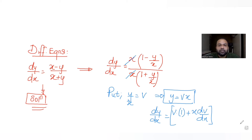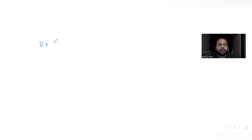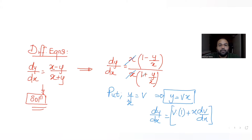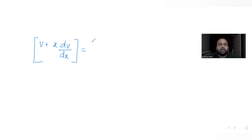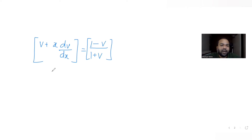So instead of dy/dx I can write v plus x·dv/dx. Substituting into the equation gives v plus x·dv/dx equals (1 minus y/x)/(1 plus y/x), and y/x is v, so it equals (1 minus v)/(1 plus v). Now I keep x·dv/dx on the left and take other v terms to the right, because we need to separate the variables.